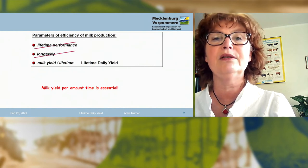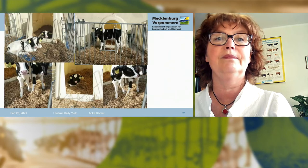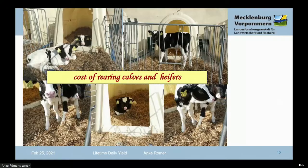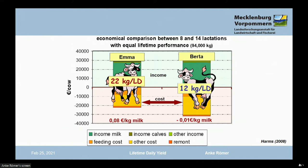Lifetime daily yield is the total milk yield per all days of living. With this parameter, you include the cost of rearing calves and heifers. If we divide lifetime performance by lifetime days, Emma gave 22 kilograms of milk per living day, and Beta gave 12 kilograms. 12 kilograms are not enough.